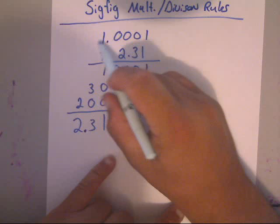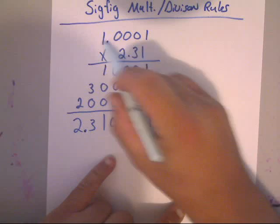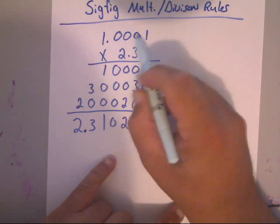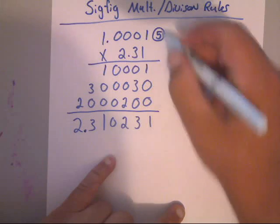We've got to do the sig fig rules. How many sig figs are here? There's one, two, three, four, five. There's five sig figs. Now, this one's got how many? One, two, three. Three.